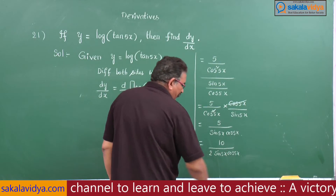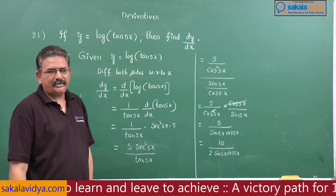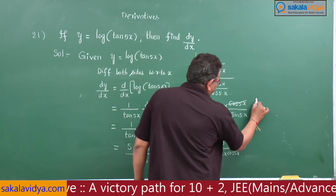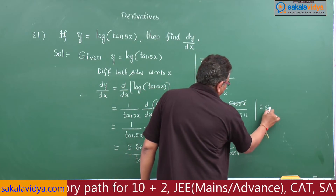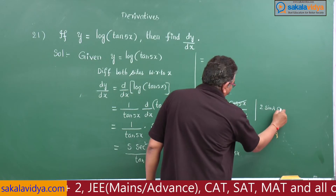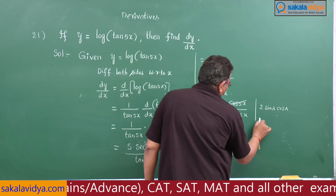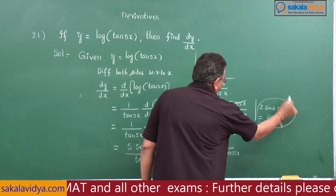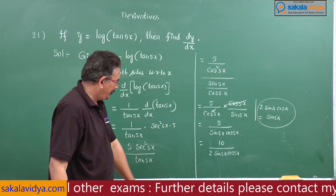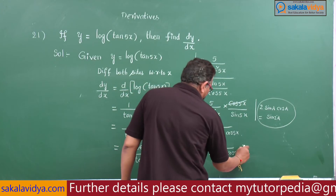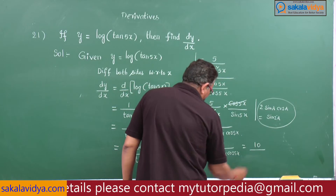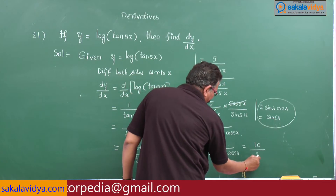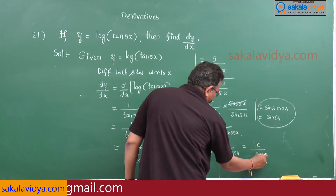Check the denominator — it is in the form of 2 sin a cos a. The formula for 2 sin a cos a is sin 2a. Using this formula, with a = 5x, it can be written as 10 by sin 2 × 5x, which is sin 10x.